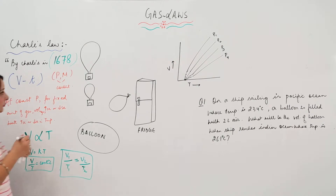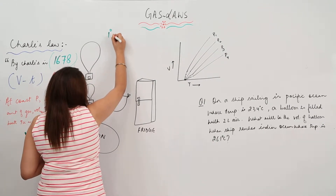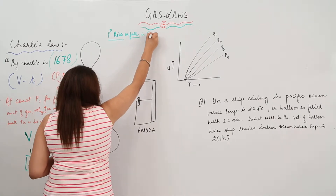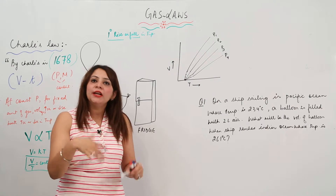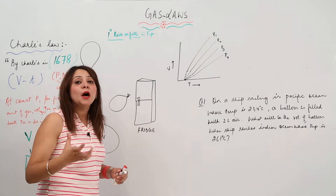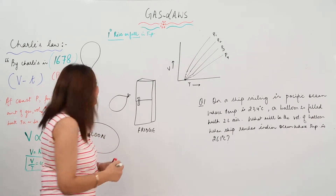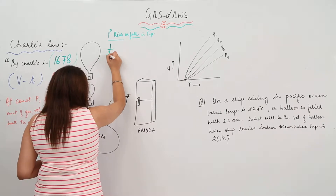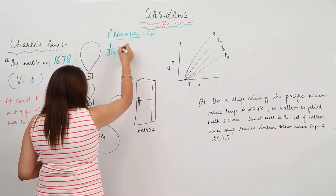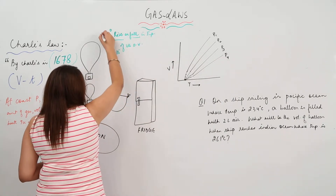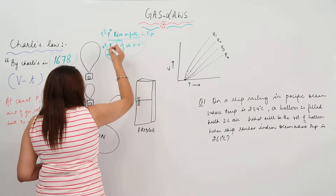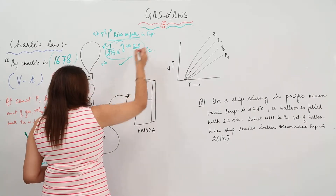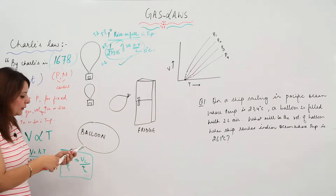What we observe experimentally is that for every one degree rise or fall in temperature, the volume increases or decreases by 1/273.15 of its original volume. If we increase the temperature, the volume increases by this amount; if we decrease the temperature, the volume decreases by this same amount. This original volume is measured at 0°C.